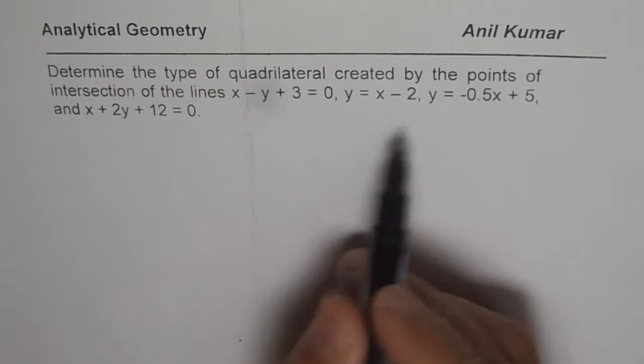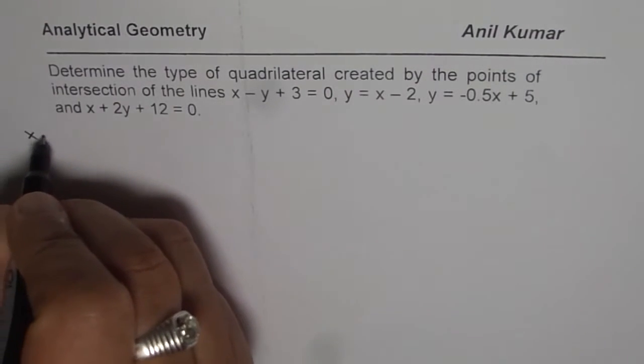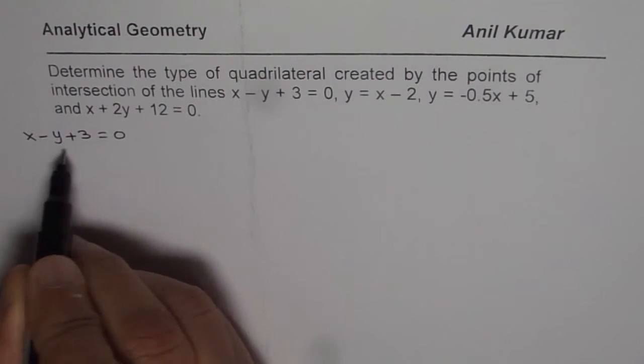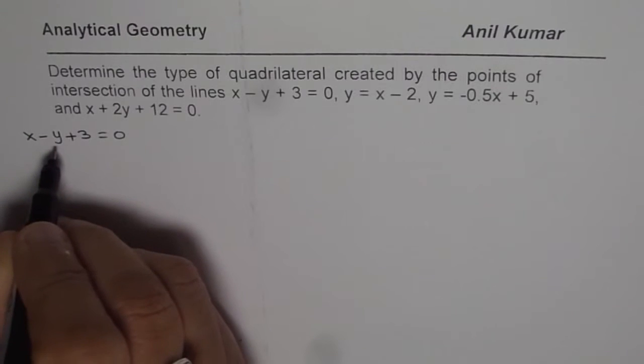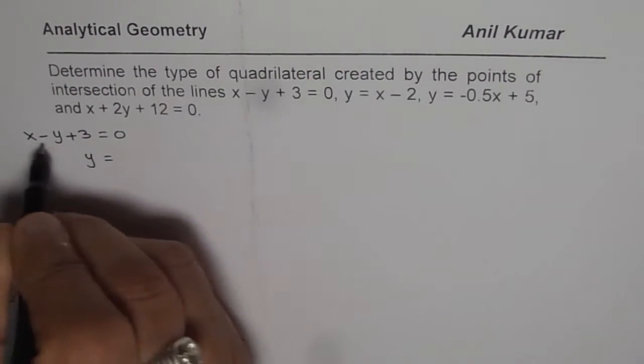Let us analyze these lines one by one. The first one here is x minus y plus 3 equals 0. If I write it in slope-intercept form, I can write this as y equals x plus 3.